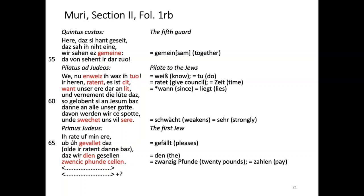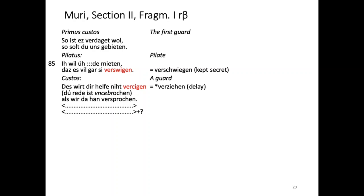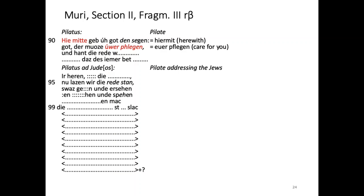Pilate negotiates with the guards: 'Ich rate auf meine Ehre, dass wir den Gesellen 20 Pfunde zählen.' The guards agree to keep quiet in exchange for payment: 'Dass ihr die Rede gar verdagend und die Geschichte zählen, so geben wir auch 20 Pfunde. Herr, der uns hier zur Stund stört 20 Pfunde bereit.' They settle terms: 'So ist es verdaget wohl - die Rede ist unverbrochen, als wir da haben versprochen. Hiermit gebe ich auch Gott den Segen.' Pilate then moves on to deal with the peddler who is coming to ask for sales permission.